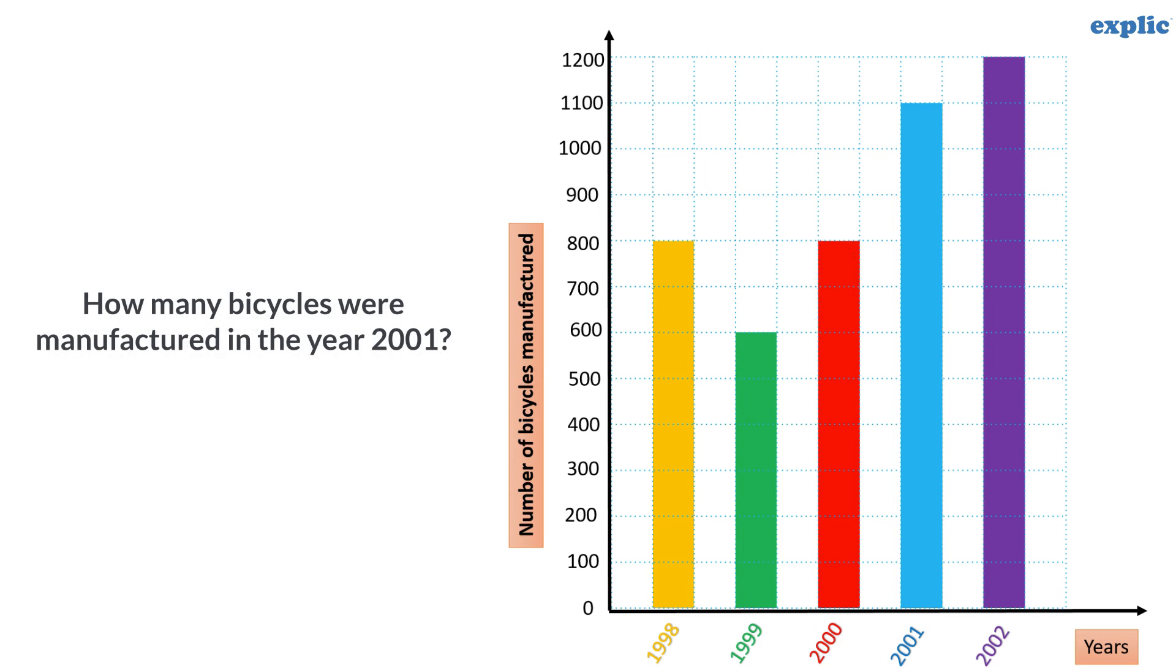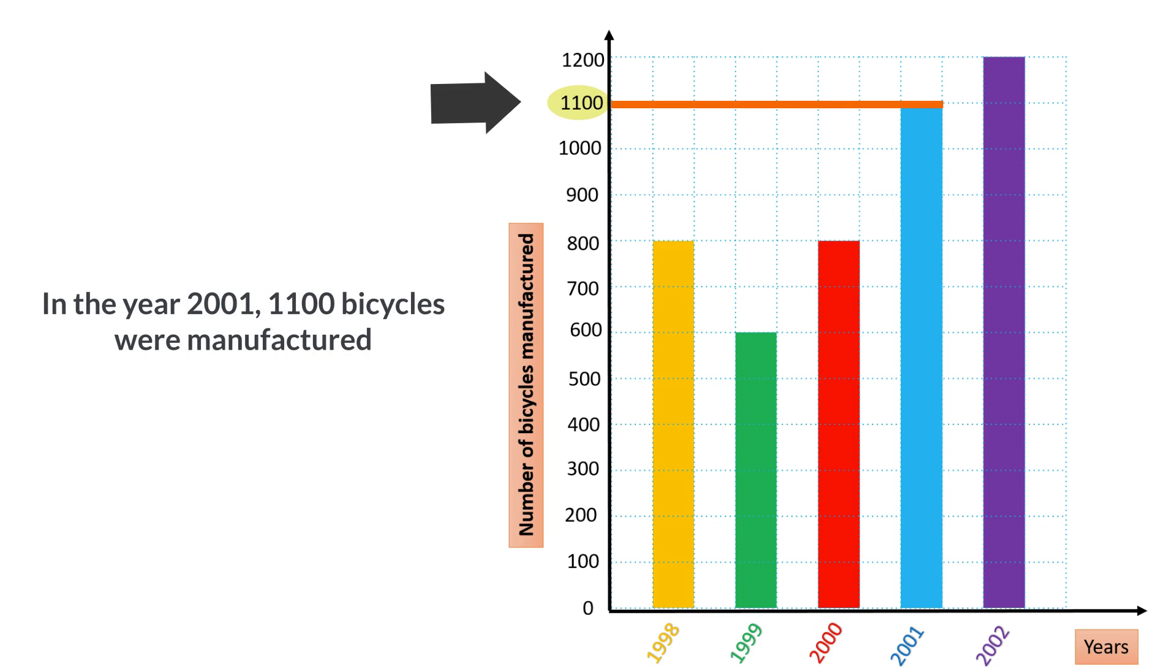To get the number of bicycles manufactured in 2001, draw a horizontal line from the top of the bar till the y-axis. Observe where it meets on the y-axis. It meets at 1100. Therefore in the year 2001, 1100 bicycles were manufactured.